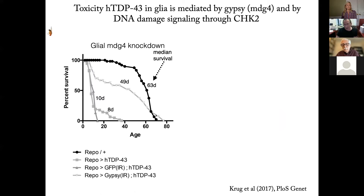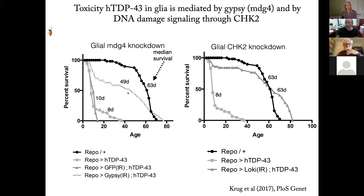I suspect that this is the subset of ALS that we are modeling when we drive overexpression of TDP-43 in fruit flies. In flies, we can establish causality. When we overexpress TDP-43, we dramatically shorten lifespan. If we knock down the MDG4 retrotransposable element, we have a remarkable extension of lifespan — not quite out to the median survival of wild-type animals, but a substantial effect. We established in our 2017 paper that much of this toxicity had to do with activation of DNA damage sensing mechanisms through CHK2. When we knock down CHK2, we believe we trick cells into staying alive and repairing their damage instead of undergoing apoptosis, resulting in a remarkable amelioration of the toxicity of TDP-43.